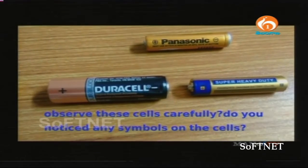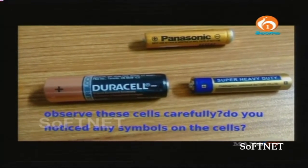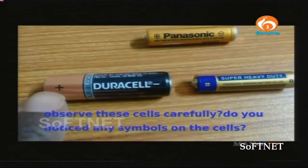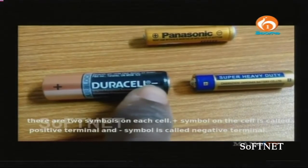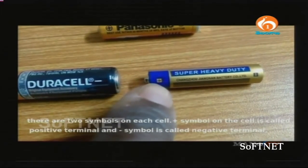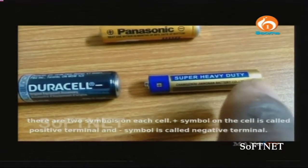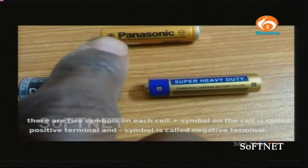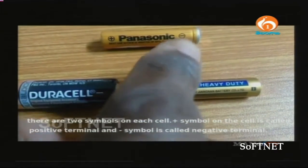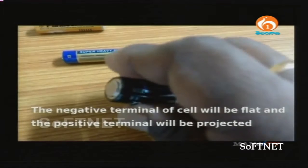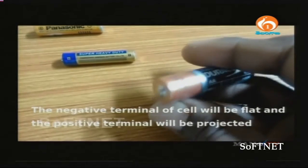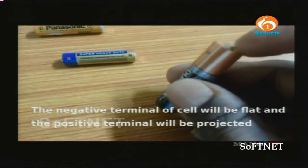Observe these cells carefully. Do you notice any symbols on the cells? There are two symbols on each cell. The plus symbol on the cell is called the positive terminal and the minus symbol is called the negative terminal.